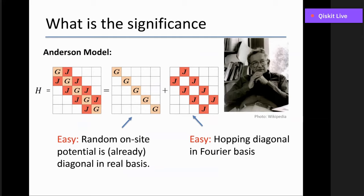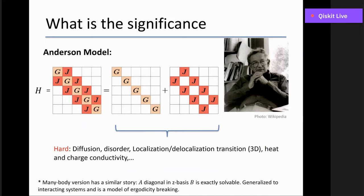An example is the Anderson model, which also has two easy pieces: the on-site potential, where every diagonal term is an independent random variable (say Gaussian), and the hopping term taking you from site i to i+1. The on-site term is already diagonal in the standard basis, and the hopping term is diagonalizable in the Fourier basis — its eigenvalues are cosines and the density of states is an arc-sine. But when you put them together, it leads to a very rich class of behavior.